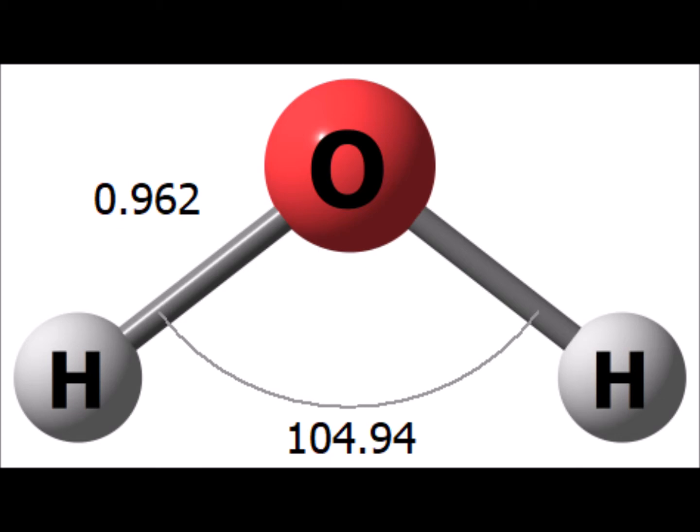The first involves a molecule of the form HXH, where X is a second row element. In particular, we are using water as our example. Here is the computed optimized structure of water.